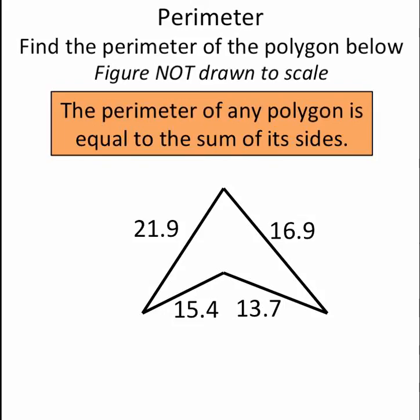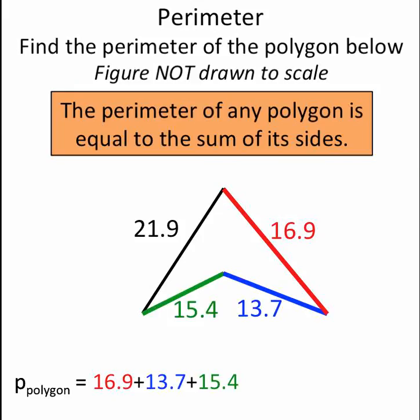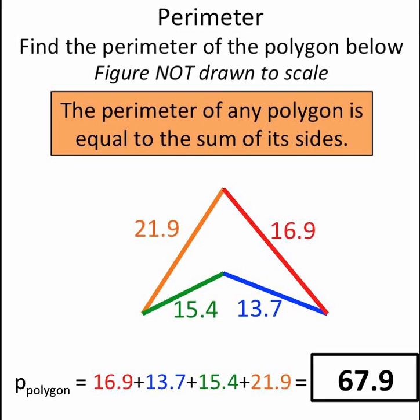So the perimeter of this polygon is equal to 16.9 plus 13.7 plus 15.4 plus 21.9. Add those all together and I get 67.9. So the perimeter of this polygon is 67.9.